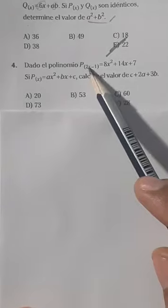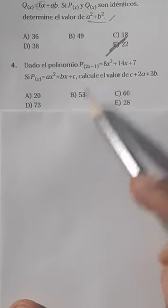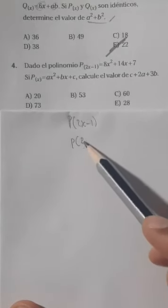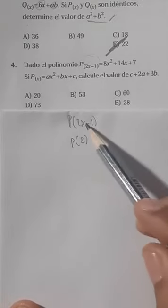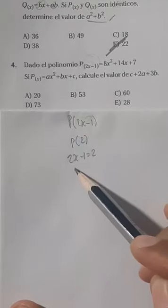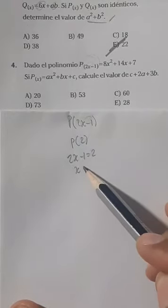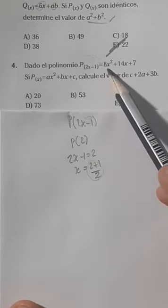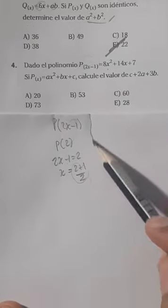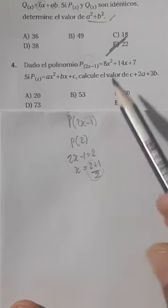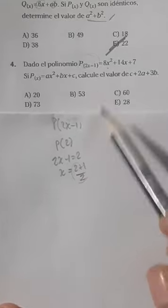Por ejemplo, imagínate lo que vamos a hacer acá. Vamos a hacer por acá 2X menos 1, y por acá tenemos P de 2. Entonces, hacemos una igualdad. Por lo tanto, el menos 1 pasa a sumar, y el 2 pasa a dividir. Este de acá va a ir a reemplazar acá.